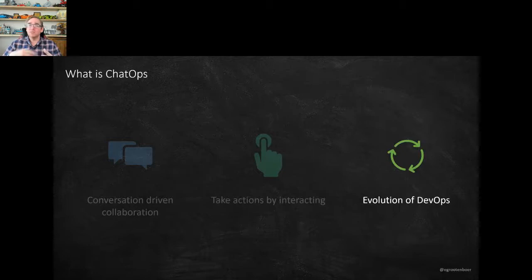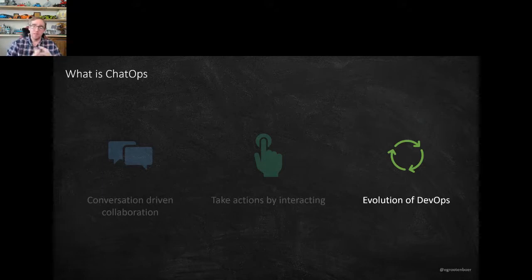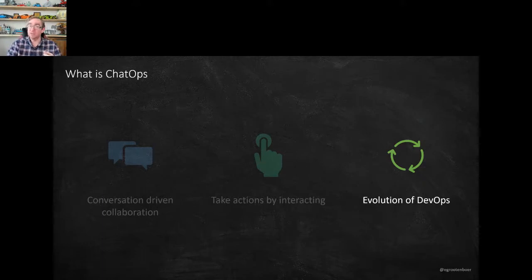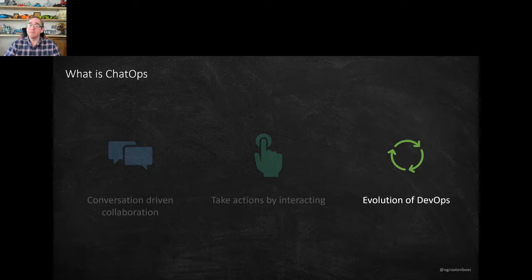ChatOps is basically an evolution of DevOps. You have the whole DevOps lifecycle: you think of something, you build it, deploy to production, monitor it, find something, and then think about the next thing — it just continues. ChatOps is the evolution of this, doing the DevOps experience through a chatbot interface.